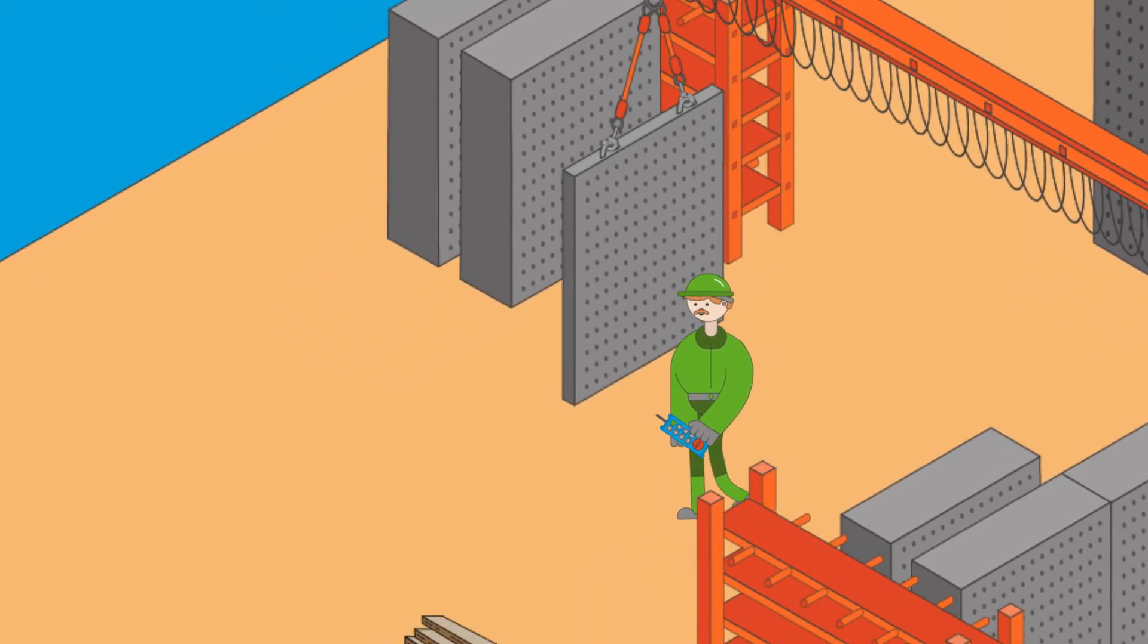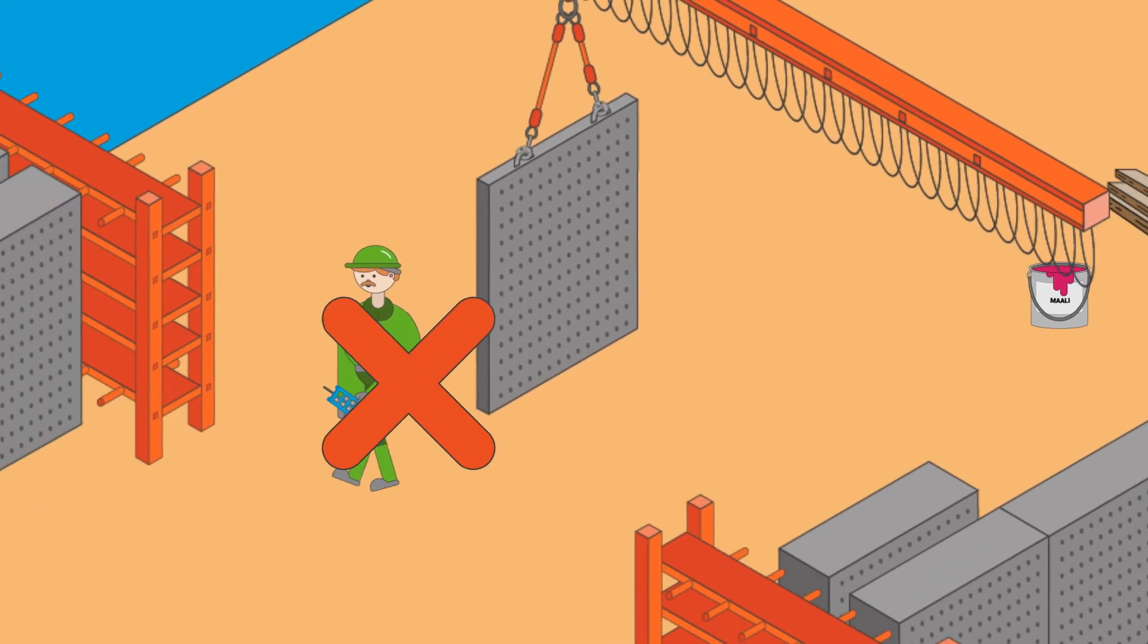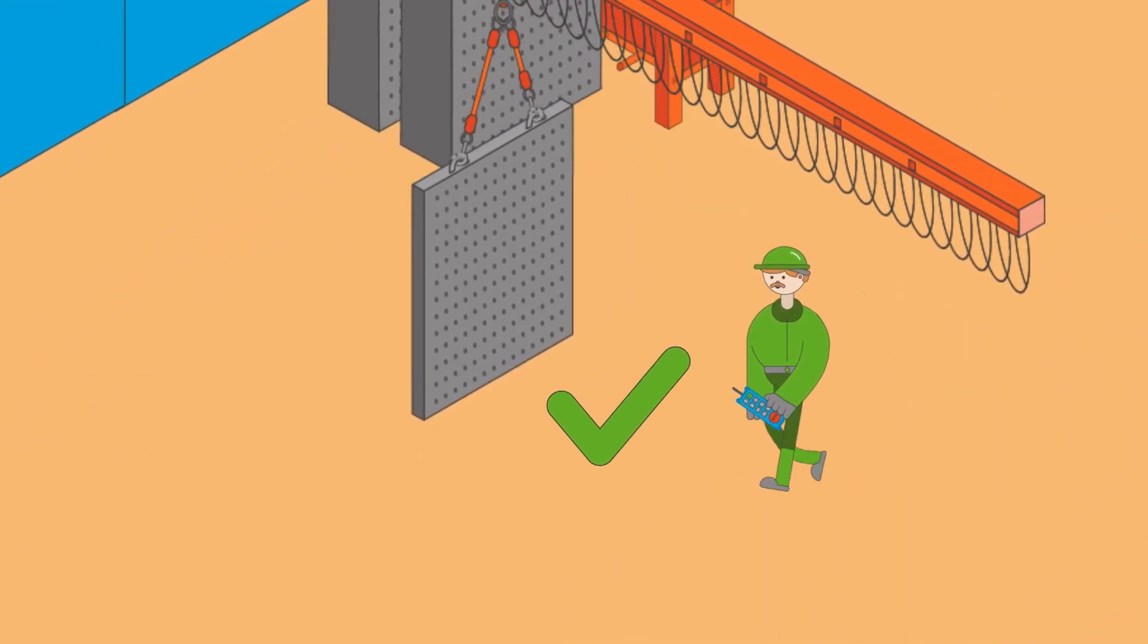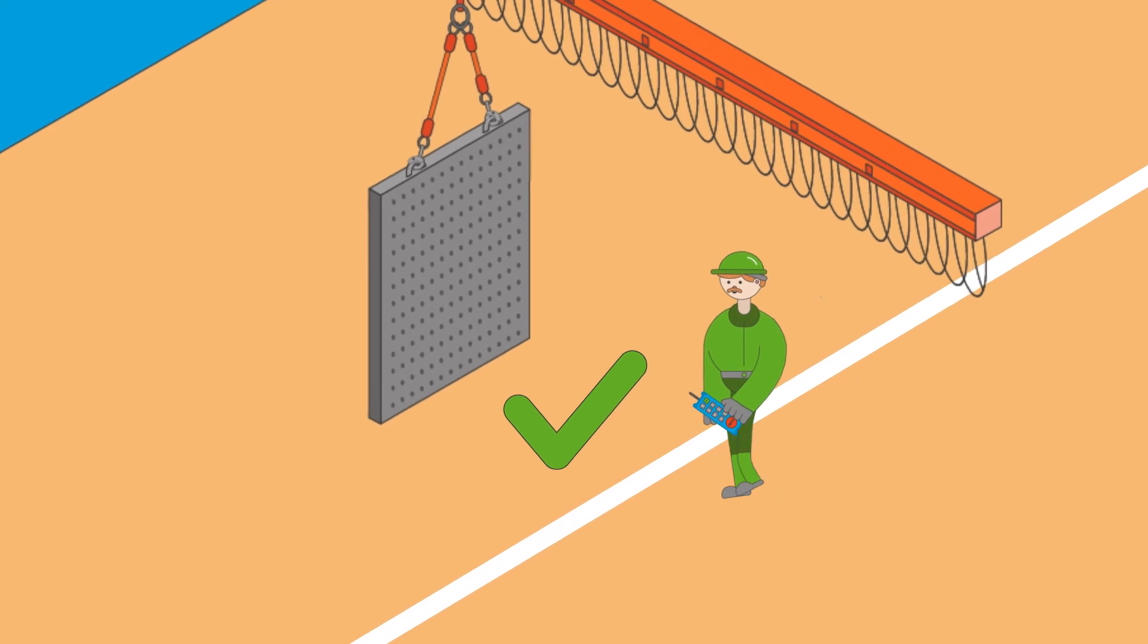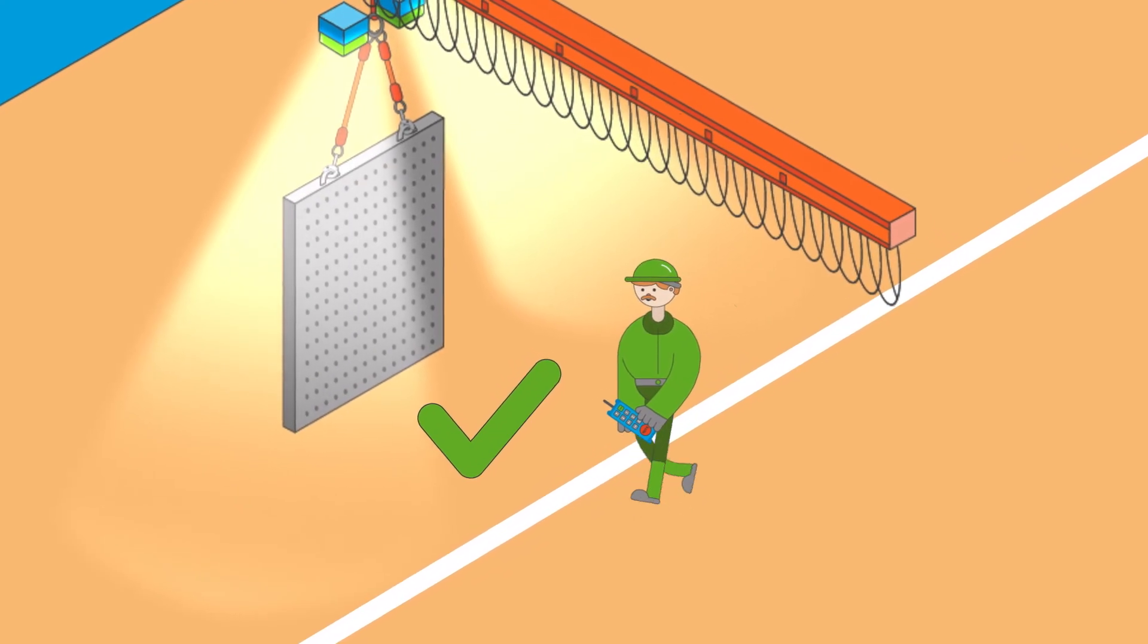Make sure that in the event of an accident, employees aren't in the hazard zone and cannot be struck by the load. Lifting zones and hazard zones should be clearly demarcated. The crane should also be equipped with warning lights and sounds.